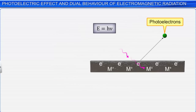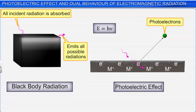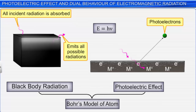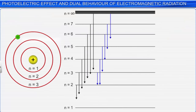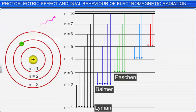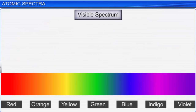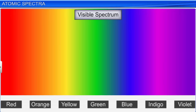These theories and conclusions, such as black body radiation and the photoelectric effect, led to the development of Bohr's model of atom. Bohr's model could successfully explain the line spectrum of hydrogen atom, which you will learn about in the next module. Before we begin to learn about atomic spectra, let's understand the term spectrum.